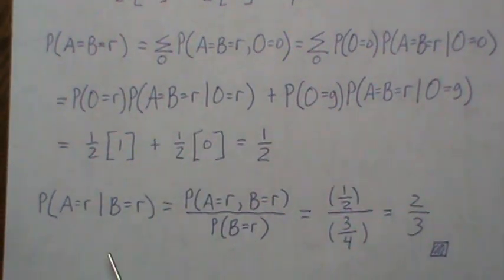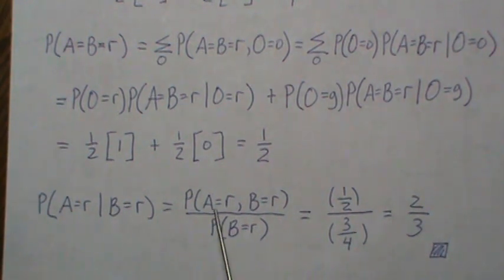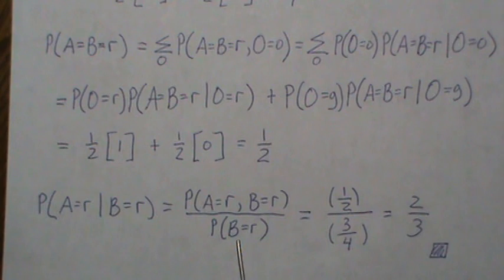Now we can find the probability that the ball in the bag is red given that we drew out a red is this intersection divided by the marginal, the probability of B is red.